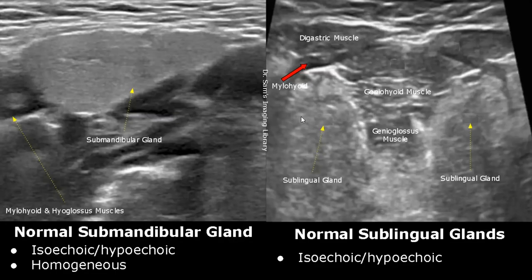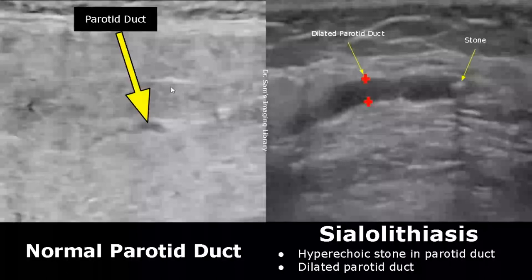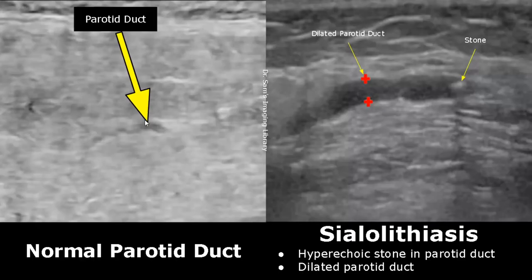Most of the pathologies involve the parotid and submandibular glands. In this image, we can see a normal parotid duct. It has a small diameter.